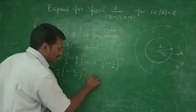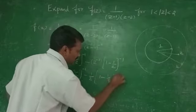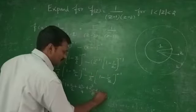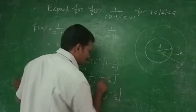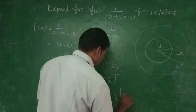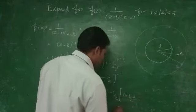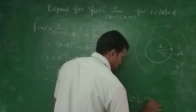It can be written as 1 minus 1/Z, which gives the final result: 1 + 1/Z + 1/Z² + 1/Z³ and so on.